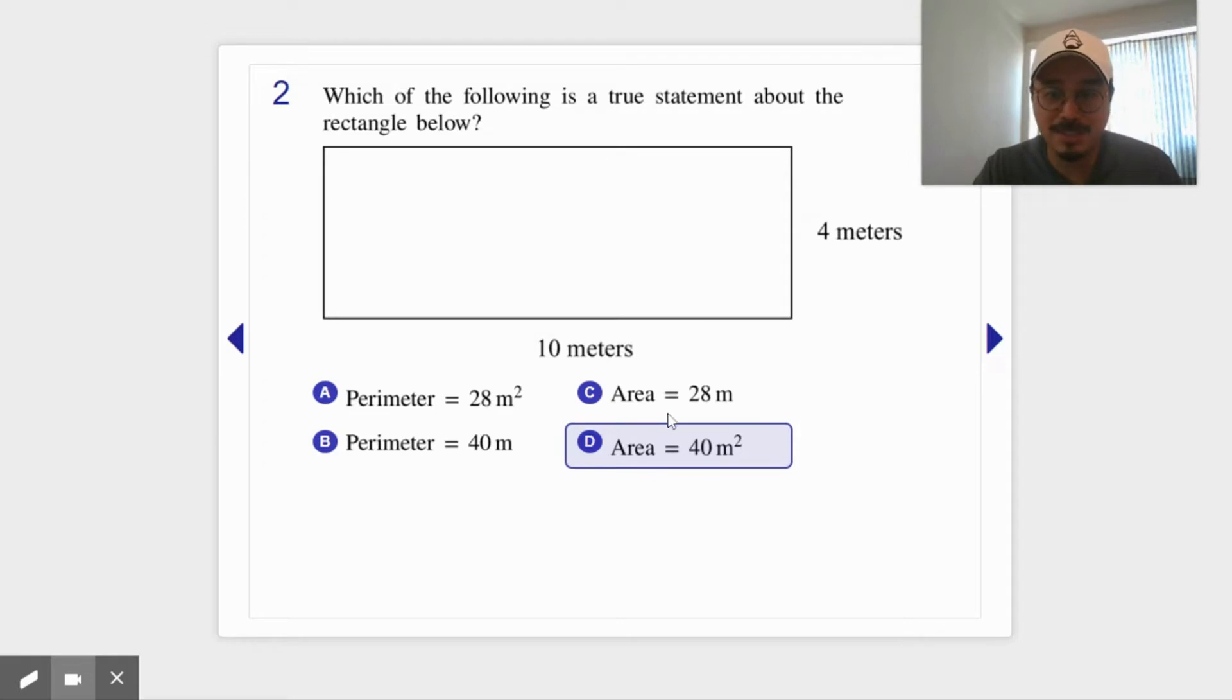Now why not? Well, C is wrong, it's the wrong number first of all. Perimeter, let's see, 10 plus 10 is 20, plus 4 plus 4 is 28. Perimeter is 28, but not meters squared. You wouldn't use meters squared for perimeter, it would only be meters. That's why A is not the correct answer.